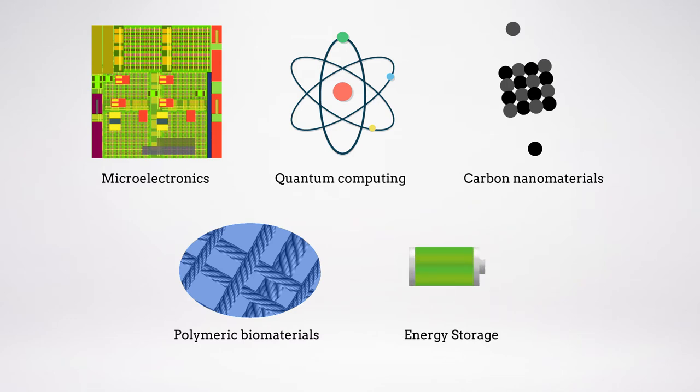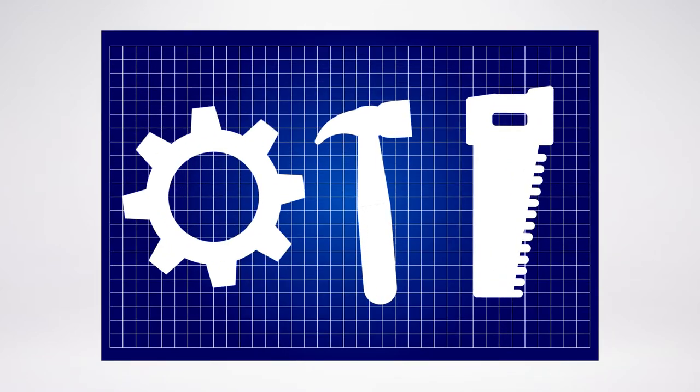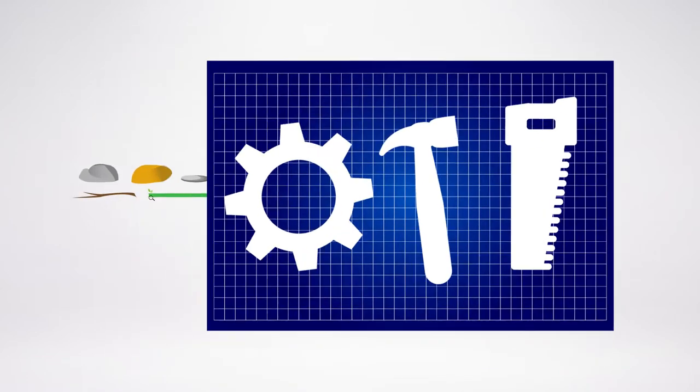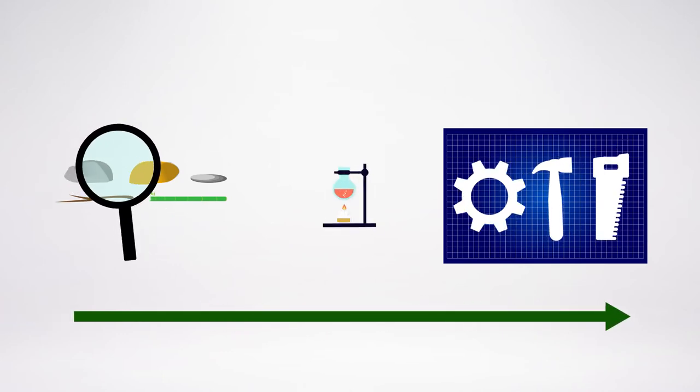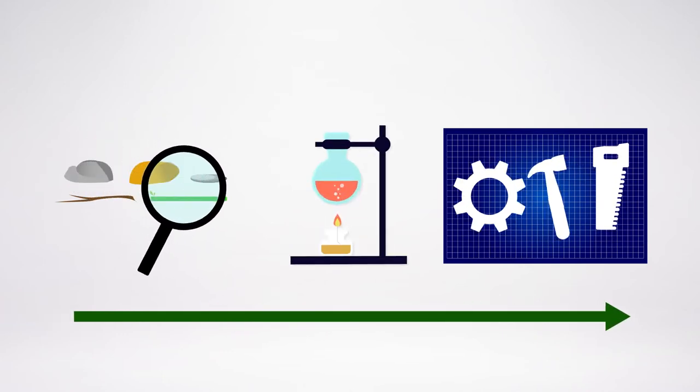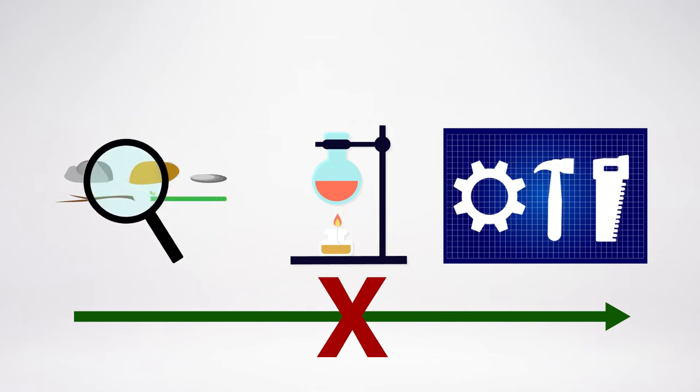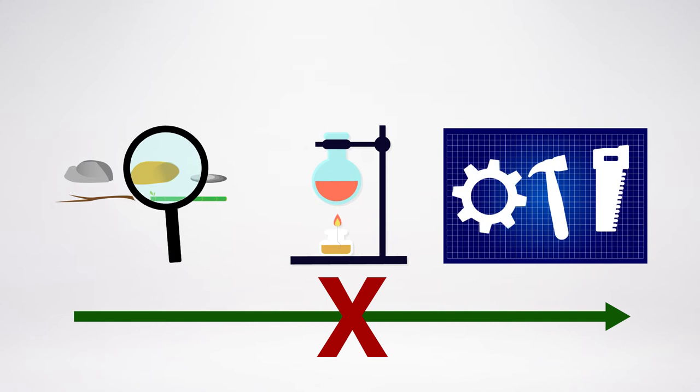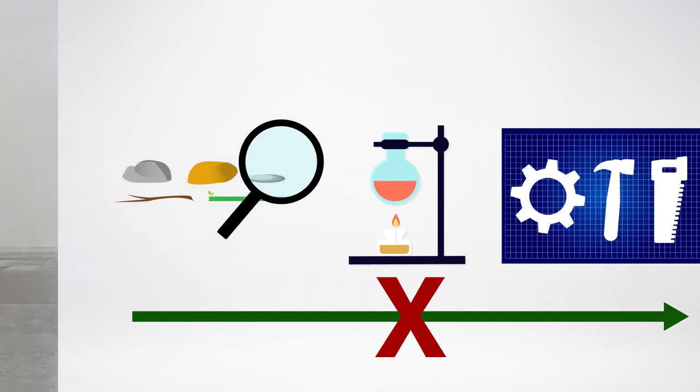While it may appear that we've reached a point where materials can be easily designed and tailored to meet society's call for stronger, better tools, the relationship between the discovery of new materials, the science that underlies them, and final product design is not straightforward. Historically, the development of new materials has been a story of engineering leading science, of trial and error application before full-fledged theory.